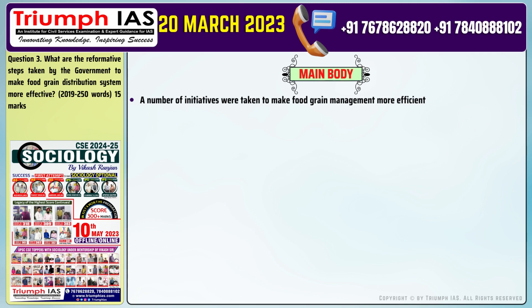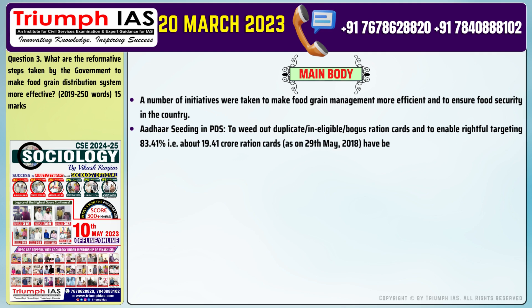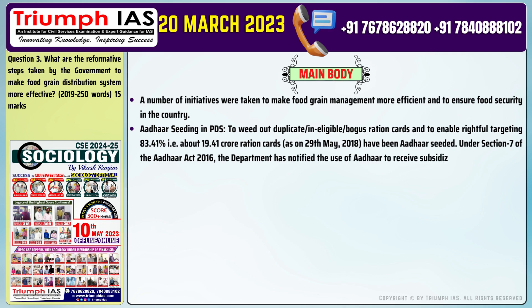A number of initiatives were taken to make food grain management more efficient and to ensure food security in the country. Point 2: Aadhaar seeding in PDS — to weed out duplicate, ineligible, and bogus ration cards and to enable rightful targeting. As on 29th May 2018, 83.41%, i.e., about 19.41 crore ration cards, have been Aadhaar-seeded. Under Section 7 of the Aadhaar Act 2016, the Department notified the use of Aadhaar to receive subsidized food grains or cash transfer on 8 February 2017.